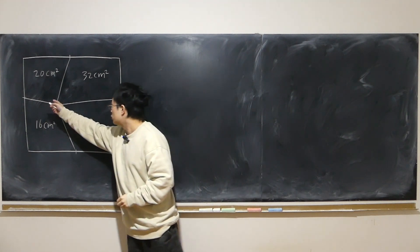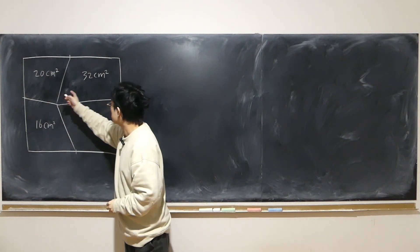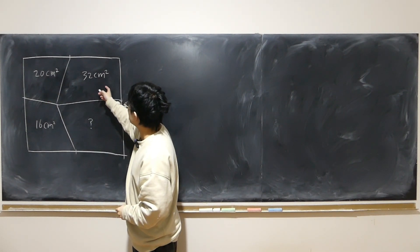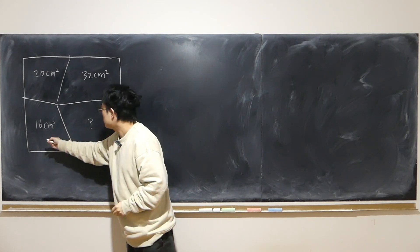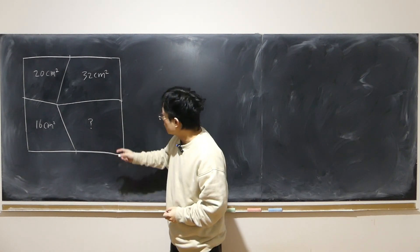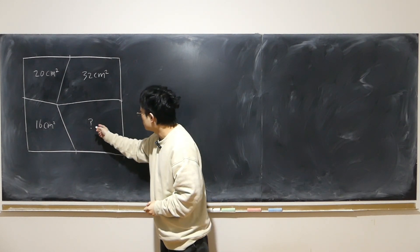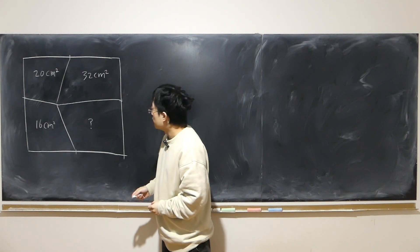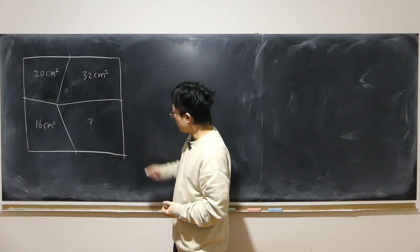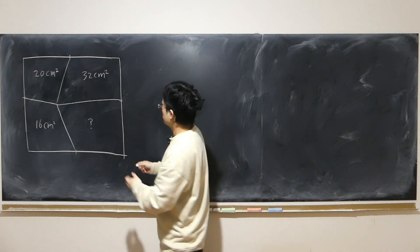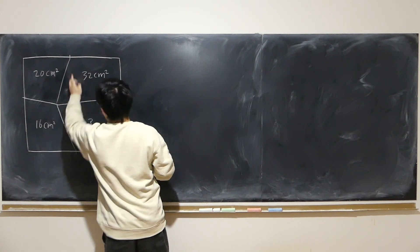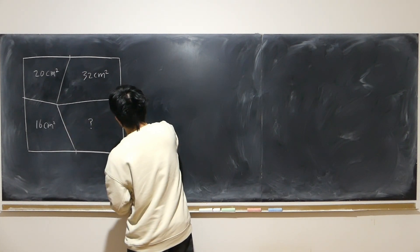These areas are known to be 20 square centimeters, 32 square centimeters, and 16 square centimeters. What is the area of this part, given that the whole thing is a square and these are the middle points?